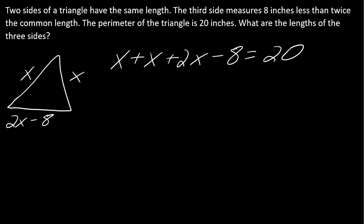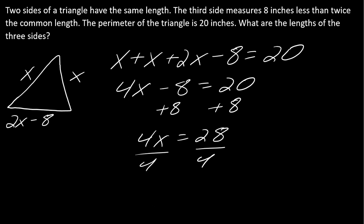The perimeter of the triangle is 20 inches, so I need to add up the sides and set those equal to 20. So I've got x plus x plus 2x minus 8 equals 20. Now we just do our thing. So I've got 4x minus 8 equals 20, then I can add 8 to each side to get 4x equals 28. Divide both sides by 4, and I get x equals 7.